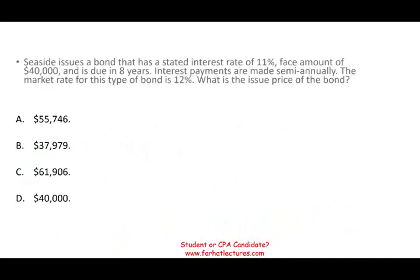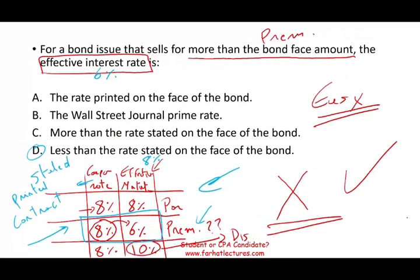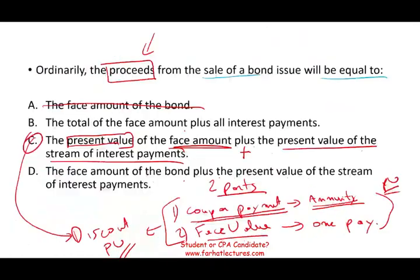Seaside issues a bond with a stated rate of 11% — the coupon rate, which is how much they are paying. The face amount is $40,000 and it's due in eight years. Interest payments are made semi-annually. The market rate for this type of bond is 12%. Before we do anything: the bond is offering 11% and the market is requiring 12%. The company is offering 11% and the market is requiring 12%, so you are paying less than the market — so your bond is a discount bond.